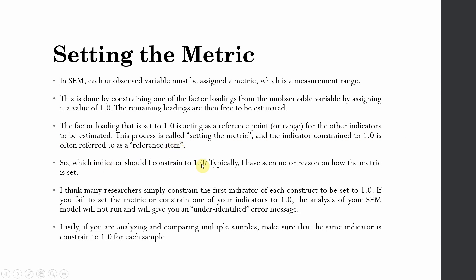Which indicator should I constrain to 1? Typically, there is no specific reason, but many researchers simply constrain the first indicator of each construct to be 1. If you fail to set the metric or constrain one of your indicators, the analysis of your SEM model will not run and will give you an unidentified error message.